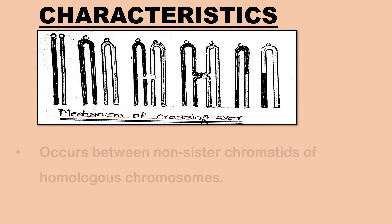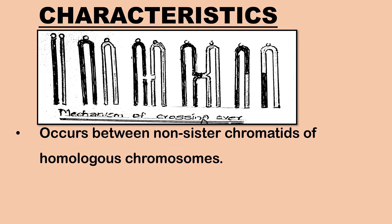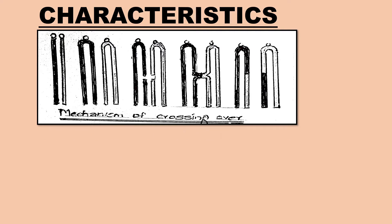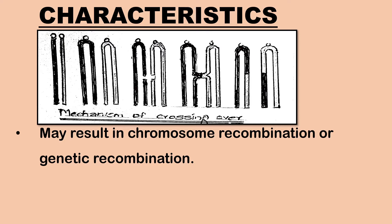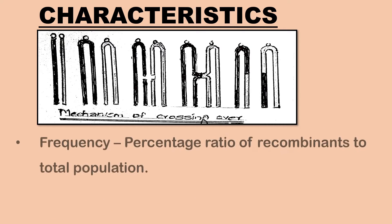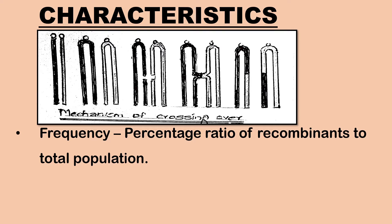Next, let us learn about the characteristics of crossing over. Crossing over occurs between non-sister chromatids of homologous chromosomes. Two recombinant types and two parental types of chromatids are formed. Crossing over may be at chromosomal level resulting in chromosome recombination, or it may be at DNA level resulting in genetic recombination. Frequency of crossing over depends on the distance between the genes located on the chromosome. Frequency of recombinants is calculated by the percentage ratio of recombinants to the total population.